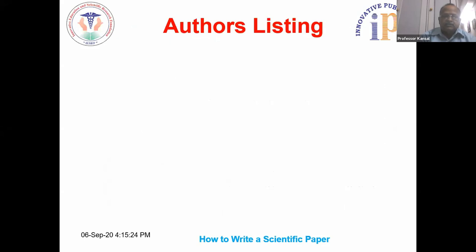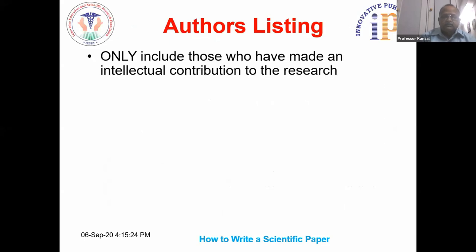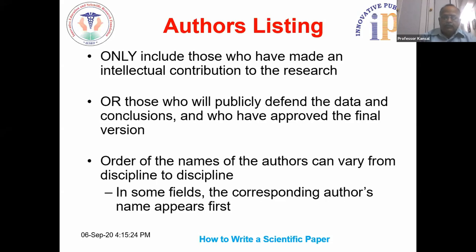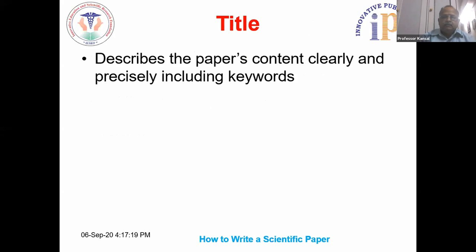On author listing: include only those who have made an intellectual contribution to the research, those who will publicly defend the data and conclusions, and who have approved the final version. The order of names can vary from discipline to discipline — in some fields, the corresponding author's name appears first. The title describes the paper's content clearly and precisely, and keywords should be included. Abbreviations should not be used in the title; it should be in simple, easy-to-understand language.